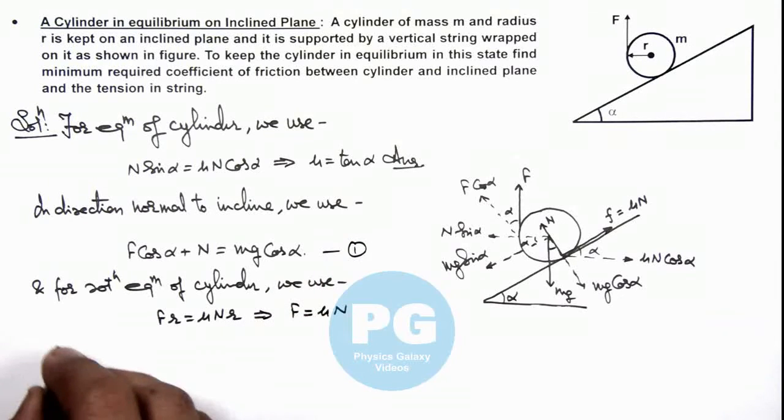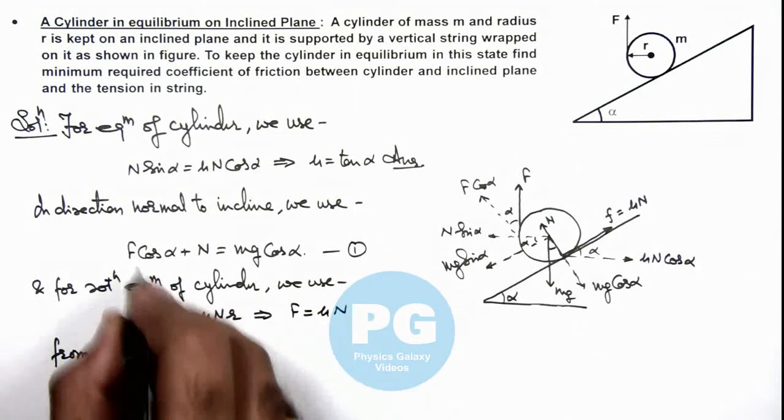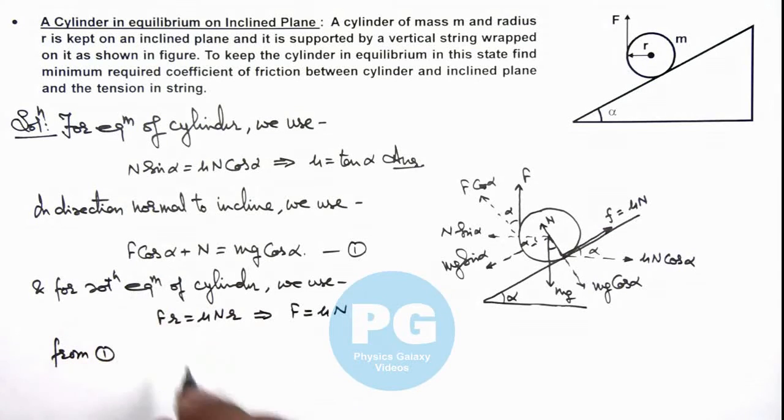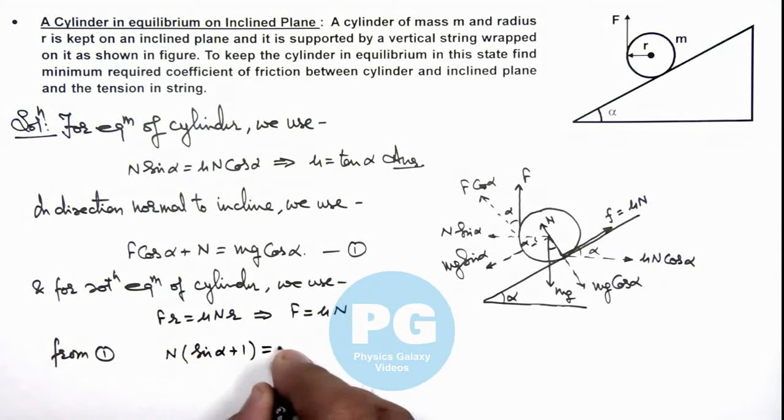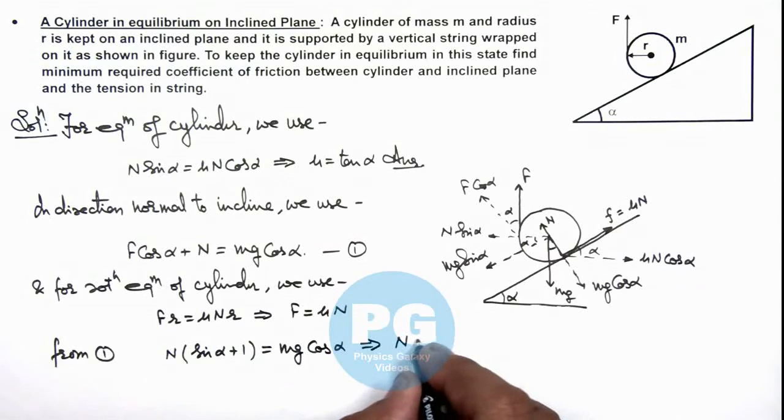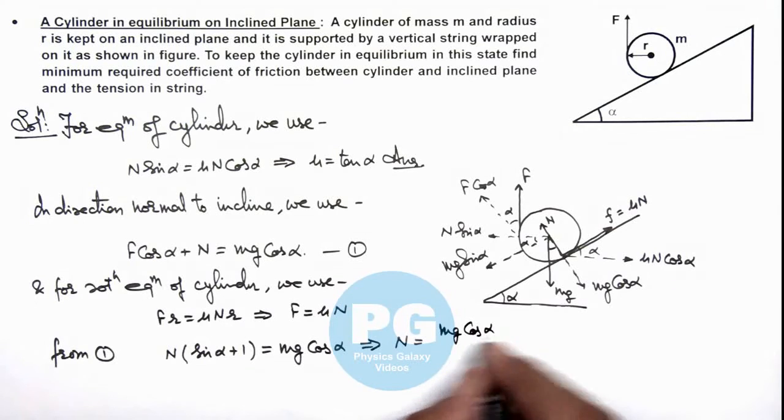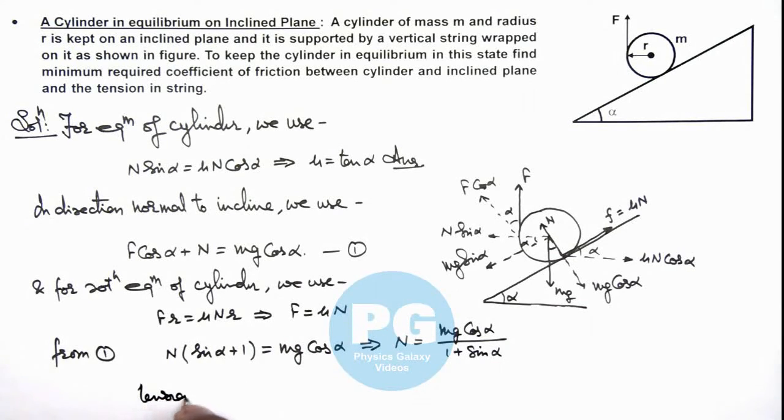From equation 1, if we substitute the value of F as μN over here, we'll get the value: N multiplied by μ cos alpha, that will be sine alpha, so this is sine alpha plus 1, is equal to mg cos alpha. So the value of N, normal reaction acting on the cylinder, is mg cos alpha divided by 1 plus sine alpha. So if this is the value of N, if we substitute N we can get the value of tension in string. The value of tension F is μN, so this is μmg cos alpha divided by 1 plus sine alpha. That is the result of this problem.